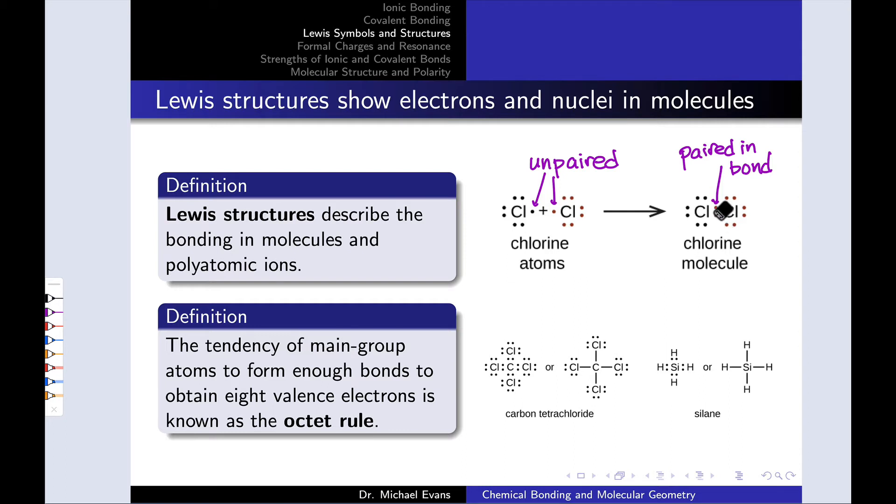So the pair of electrons between the chlorines represents the single bond between the chlorine atoms, a single covalent bond, but there are other electrons, other dots around the chlorine atoms that we find in the Lewis structure. These are not involved in bonding. They're what we call non-bonding or non-bonding lone pairs where the idea of lone evokes this idea that that pair of electrons is alone on the chlorine atom. It's not being shared with any other atoms.